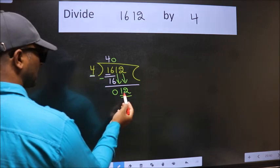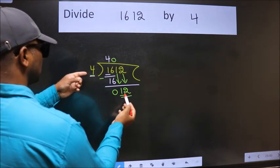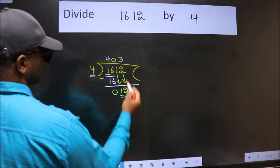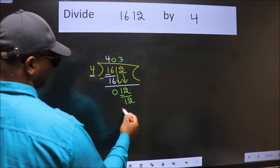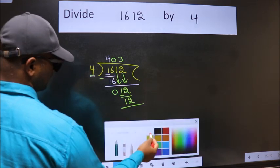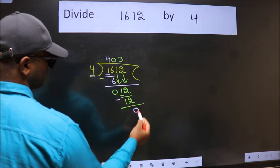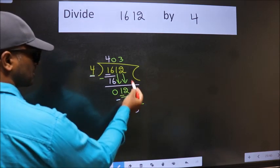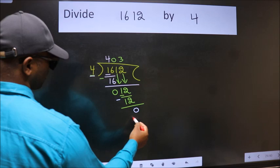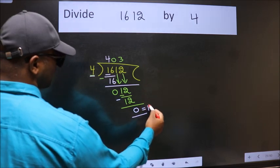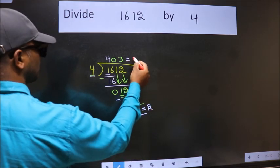So 12. When do we get 12 in the 4 table? Four threes are 12. Now we subtract, we get zero. No more numbers to bring down, so we stop here. This is our remainder and this is our quotient.